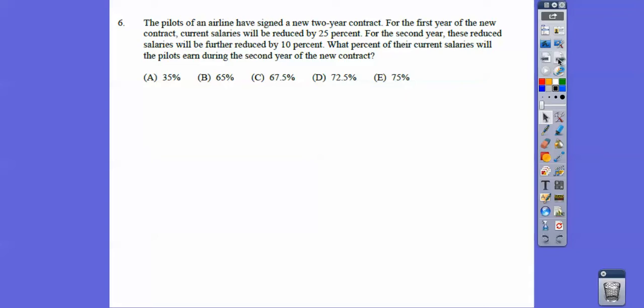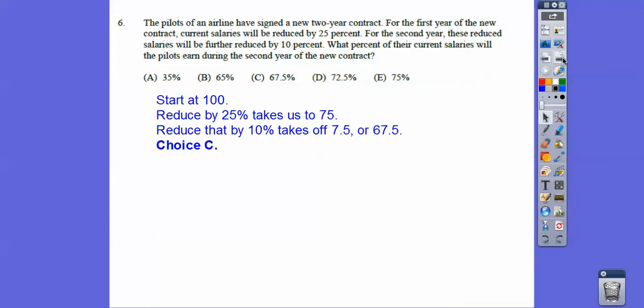The pilots of an airline signed a new two-year contract. For the first year of the new contract, the current salaries will be reduced by 25%. For the second year, it's going to be reduced a further 10%. On these kind of problems, percent is always per 100. So if you always start at 100 and then work with these numbers, then your final answer will be in terms of your percent. So start with 100. Reducing it by 25% takes us to 75. And then 10% of 75 is 7.5, so when I take 7.5 off of 75, we get 67.5, choice C. Just start at 100 on these percent problems, that's the trick.